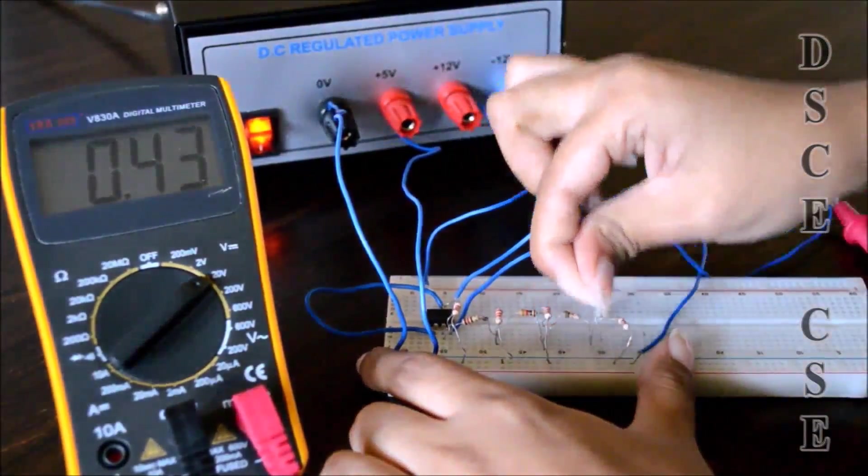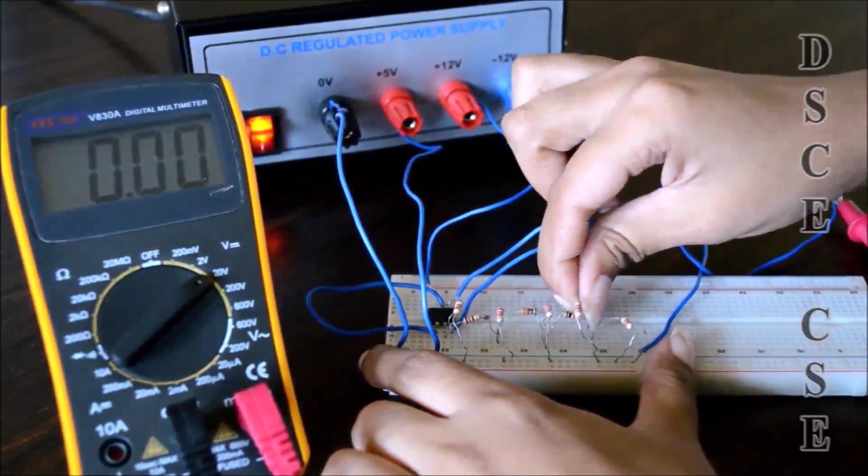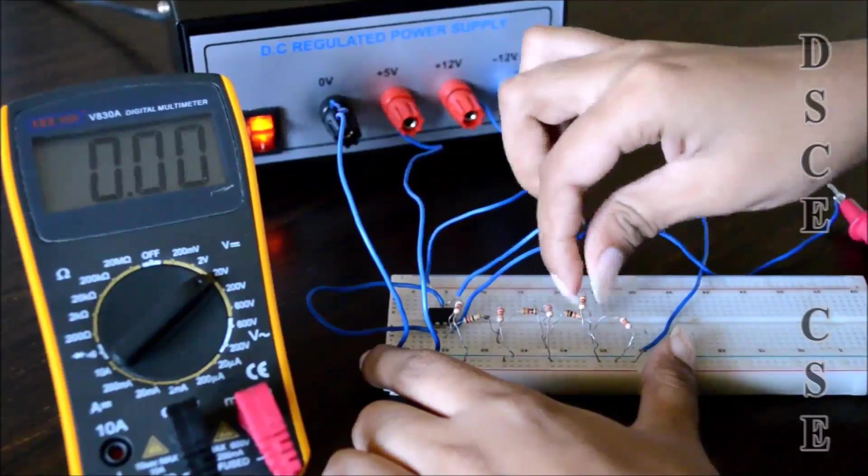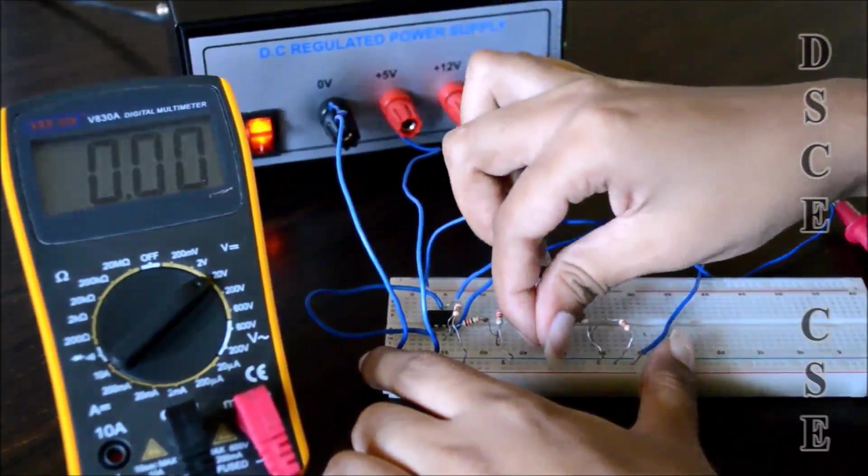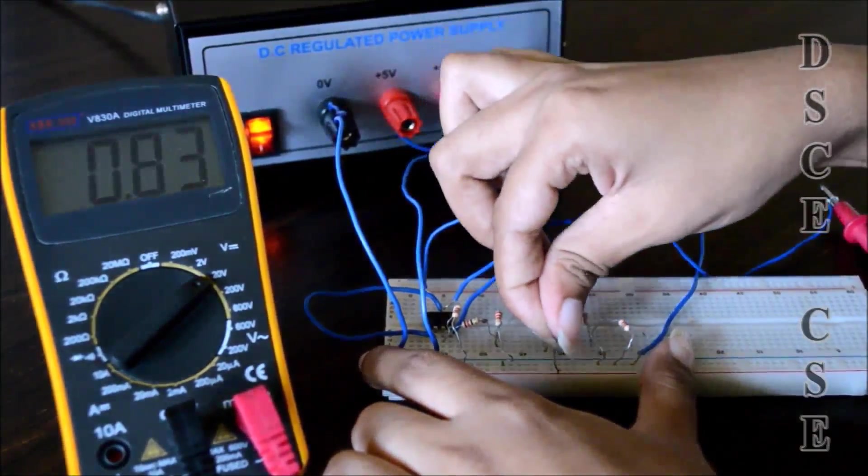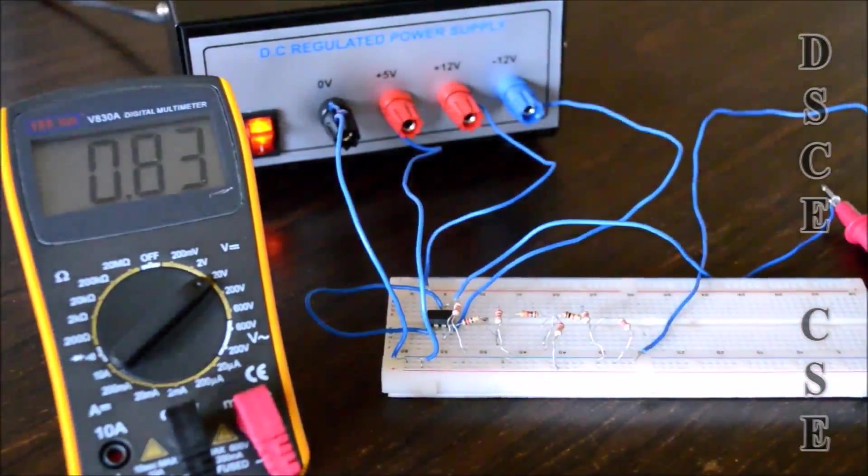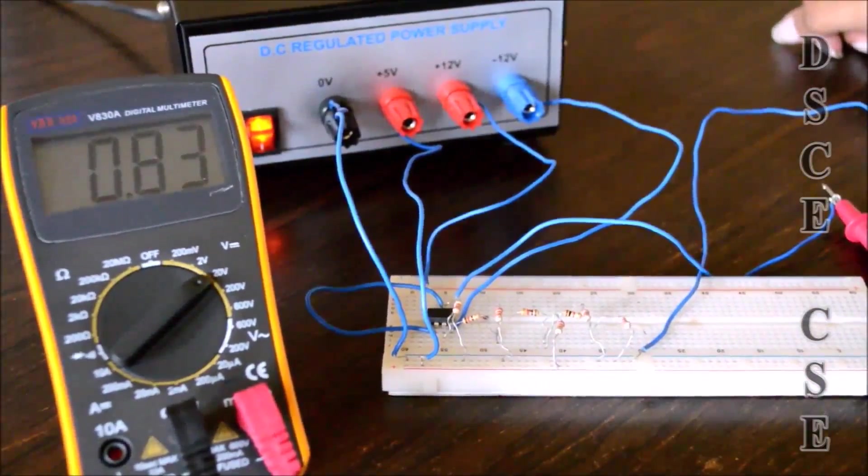For input 2, that is 0.83. Similarly, we have to check from 0 to 15 all the values. The values which we get on a multimeter are the practical values.